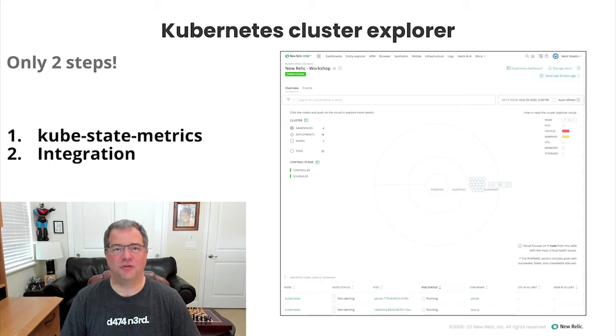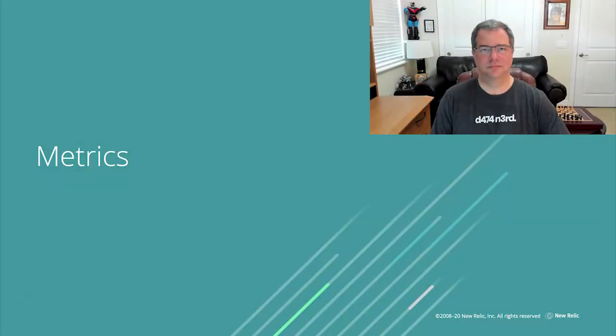Now let's walk through some of the features of the Kubernetes cluster explorer. Okay, that was simple enough. You proved that you know what you're doing. But what's next? How do we look at metrics? Where are we going to get the data from? I understand what the Kubernetes environment looks like within New Relic, but how do I use it? Now that we've established an integration to our Kubernetes cluster, let's take a look at the New Relic Kubernetes cluster explorer. Let's start with some metrics.